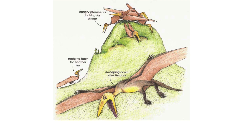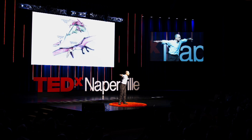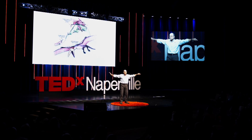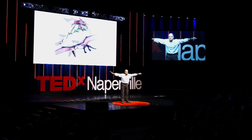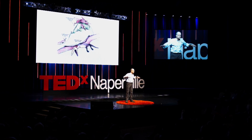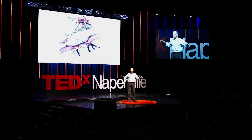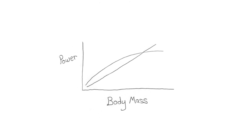What is assumed is that these were opportunistic flyers — soaring creatures. They would sit on top of a cliff and wait till thermals developed, wait for winds to blow, and then they could jump off and fly. And this is a perfectly sound assumption if you can't figure out how they could have flown in the first place.